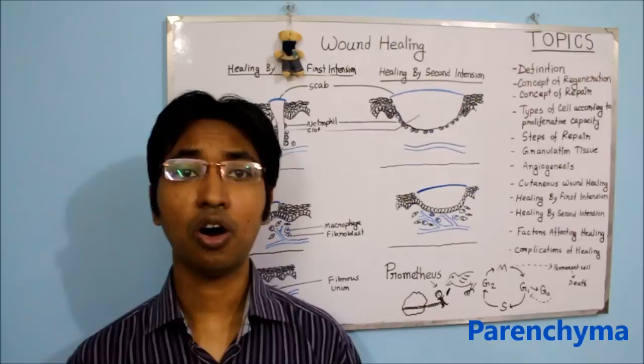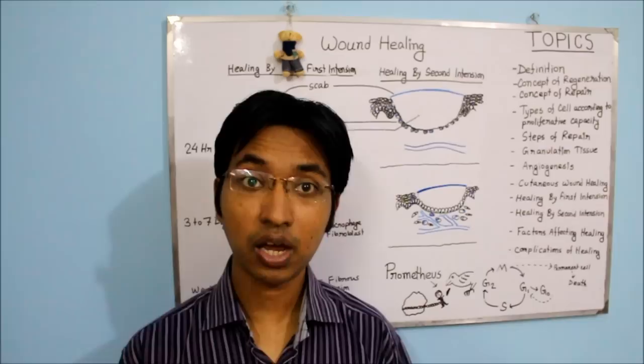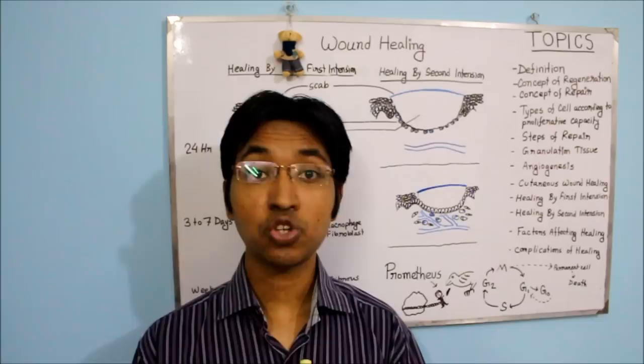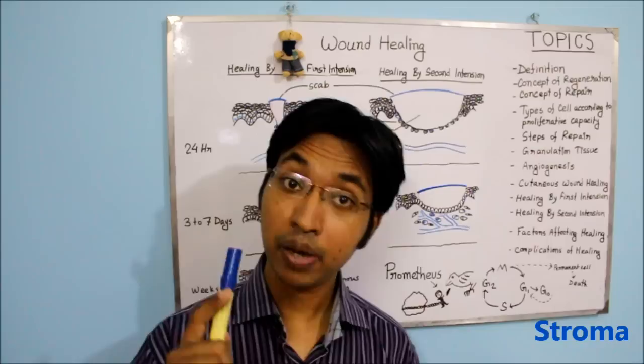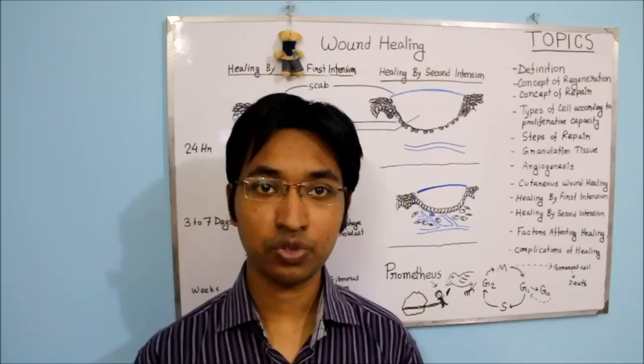Always remember any organ has two parts. One is the functional part, known as the parenchyma. There is also a supporting structure known as the stroma. So whenever we talk about regeneration, there is proliferation of parenchymal cells resulting in complete restoration of the structure.